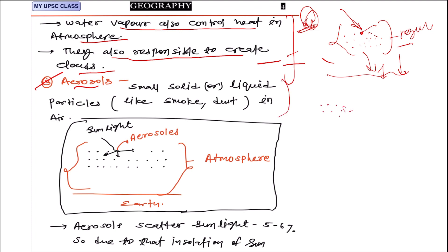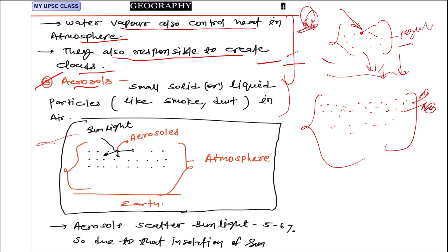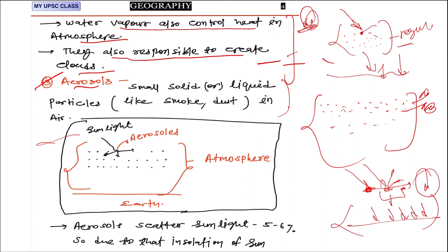The third part of the atmosphere is aerosols. Aerosols are very small dust particles — from soil, smoke, or any liquid or dust particles available in the environment. These are also very important because when sunlight comes in, aerosols scatter it. These hard particles deviate the sunlight path, reducing the energy and heat received at the Earth's surface. About five to six percent of sunlight is deviated by this scattering process, which reduces the insolation received at Earth's surface.